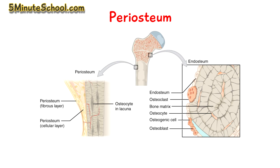Something interesting to note is that as you get older with age, the inner osteogenic layer tends to get thinner. The periosteum is attached onto the cortical bone with very strong collagen fibres known as Sharpey's fibres.